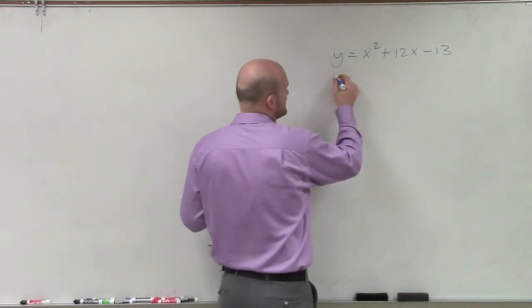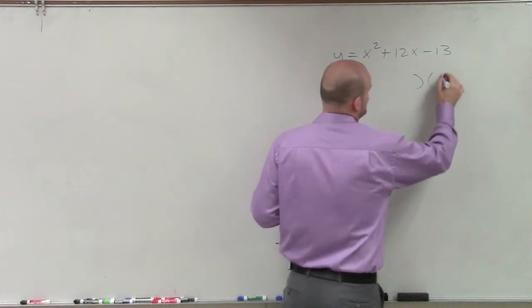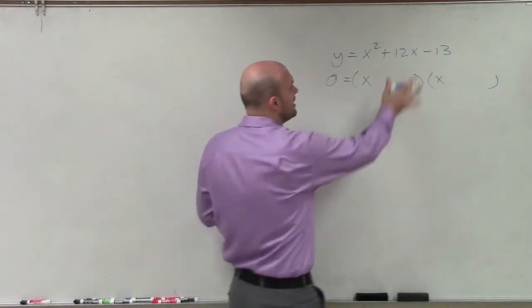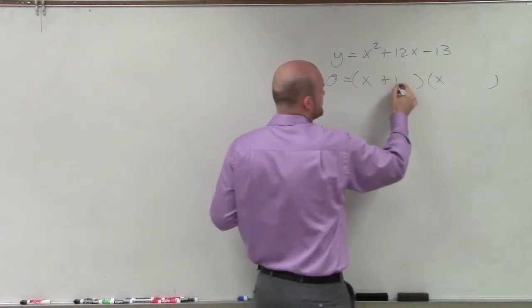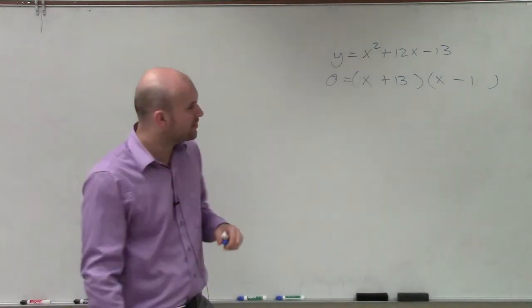So therefore, to solve this, we set this equal to 0. And then we know our first two factors are going to be x and x. And then what I simply need to do is, I know that the larger factor is going to be positive 13 and negative 1. It doesn't matter which order you put them in.